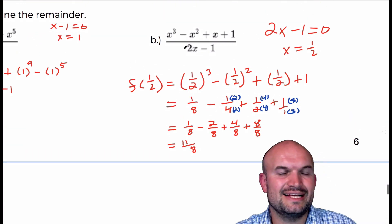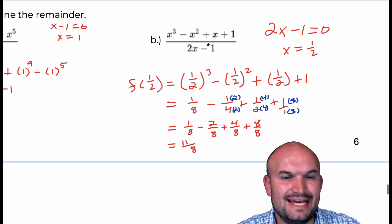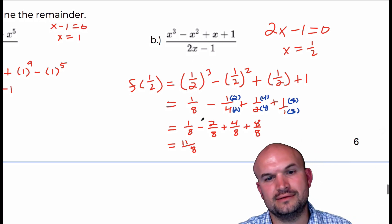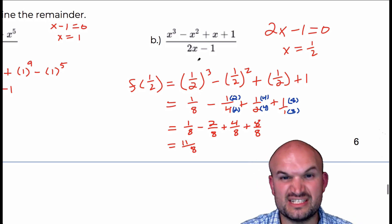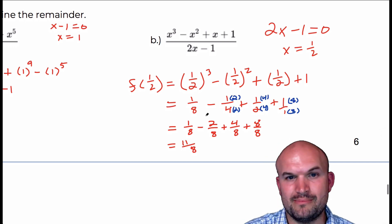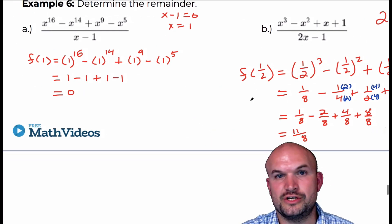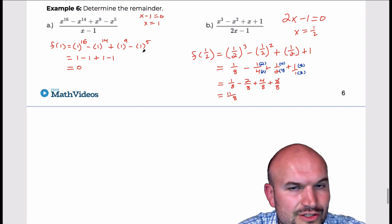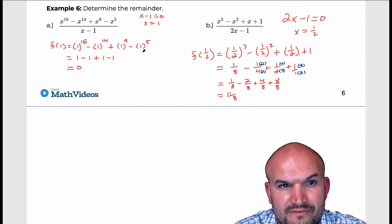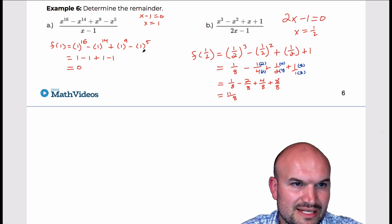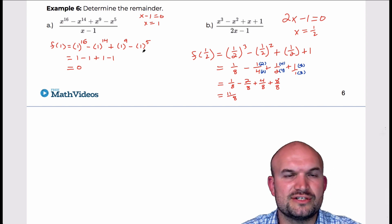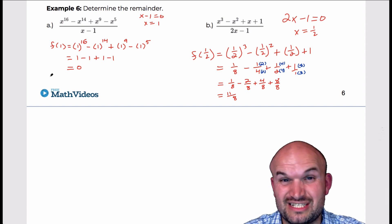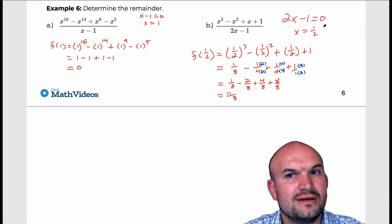That's important because it tells us that 2x minus 1 is not a factor of this polynomial, because the remainder is 11 eighths — not zero. Since the remainder is not zero, it is not a zero of the polynomial. You can use synthetic division to find the remainder, or long division to find the remainder, but on problems like this — with polynomials to a really high power or multiple zeros — using the remainder theorem is going to be preferred over long division or synthetic division.